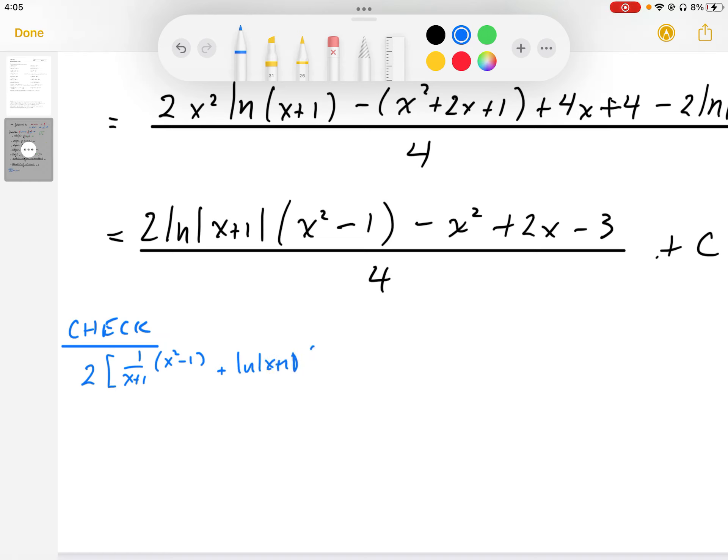And then the derivative of that is going to be 2x, and then minus 2x plus 2 plus 0, and that's all going to be times 2 here. And then the minus 2x plus 2, and that's going to be all over 4.